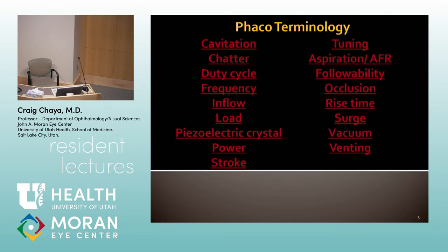So we got all the tough ones. The basic terms on the right side — first thing would be aspiration, which is essentially just your vacuum power, the amount of vacuum power. A lot of what you're doing in FACO is not actually using FACO power. You're using aspiration to bring pieces to you, and then you're using occlusion to move the pieces around.